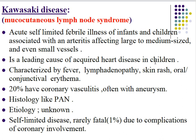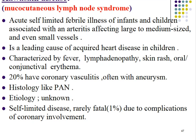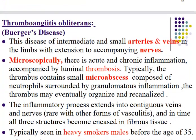Most heart disease in children is congenital, but Kawasaki disease represents an acquired form. It is characterized by fever, lymphadenopathy, skin rash, oral and conjunctival erythema, and 20% of patients have coronary vasculitis often with aneurysm. Histology is similar to polyarteritis nodosa but differs in clinical manifestation and age of onset. The etiology is unknown; it is self-limited but can be fatal due to coronary involvement.